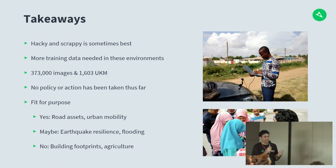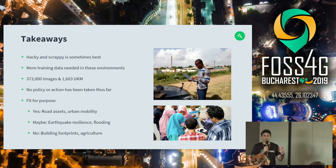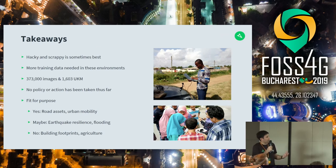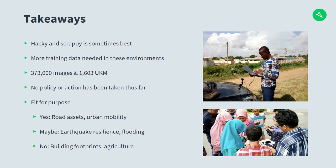Takeaways from that project: hacky and scrappy is sometimes best — you can complain that you don't have the equipment or the internet's too slow, but there's often a way to make it work, as evidenced in Ghana where they literally sticky-taped a camera to a car. More training data is needed in these environments; if we want better detections in Kampala, we need more annotated images from Kampala. Stats: 370,000 images collected, 1,600 unique kilometres — impressive given the circumstances. Mapillary is fit for purpose for road assets and urban mobility, less so for earthquake resilience and flooding, and not good for building footprints or agriculture where drones would be a better fit.